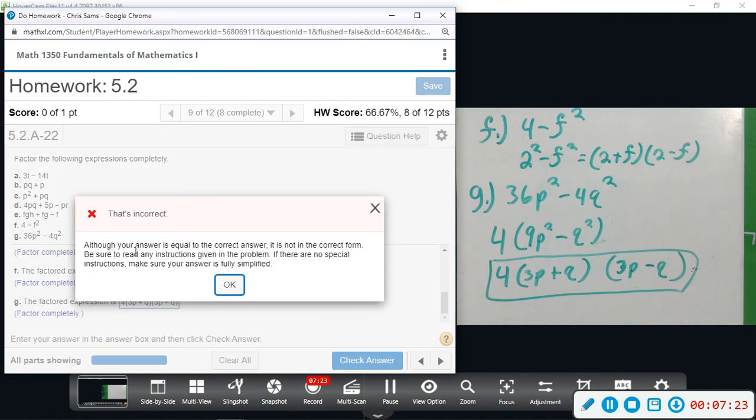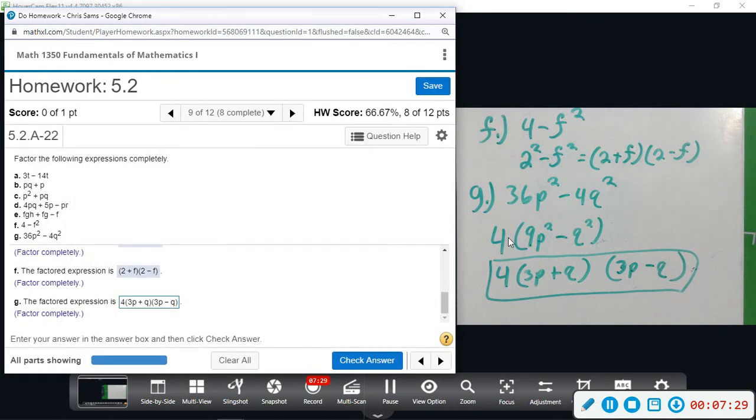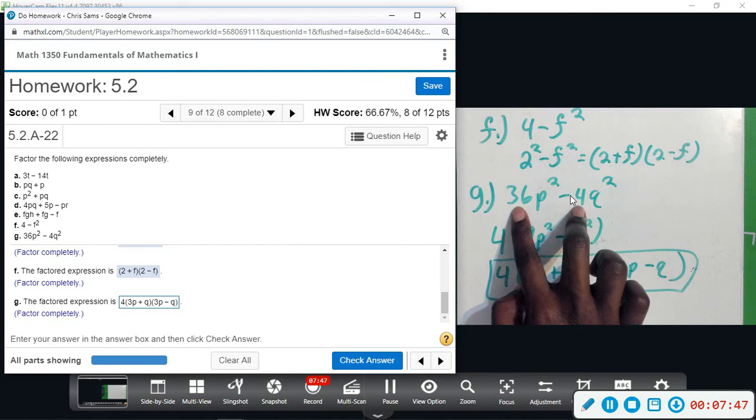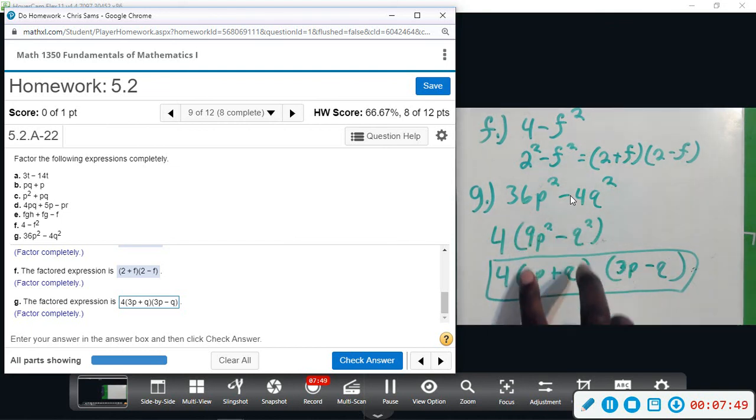It says although your answer is equal to the correct answer, it is not in the correct form. Okay, so maybe they don't want us to factor out the four first. We can just write it as six and minus two. So we'll do that. So going back here, perfect square is six, perfect square is two. So I'm just going to change this to a six and change this to a two in front of those numbers.